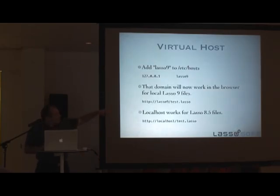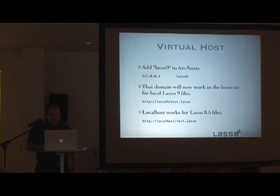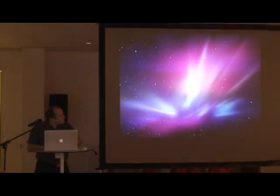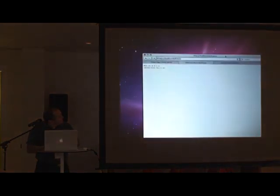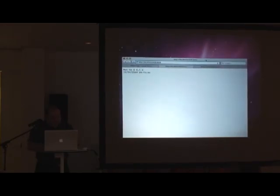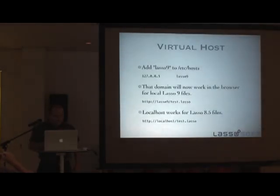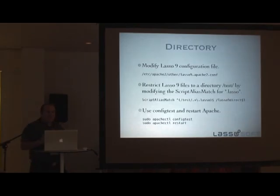So now we can call a URL like "lasso9/test.lasso" — that's going to load our Lasso 9 files. If we call localhost, that's going to load our Lasso 8.5 files. I've done this, so here we have Lasso 8.5.6 and then Lasso 9, and they're both running on this machine. So it's pretty simple. That's the virtual host method.